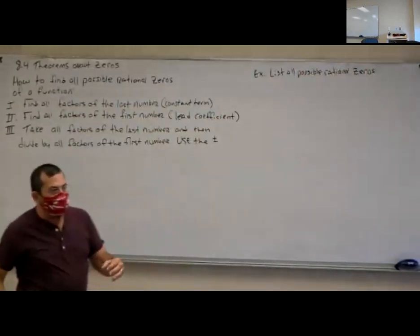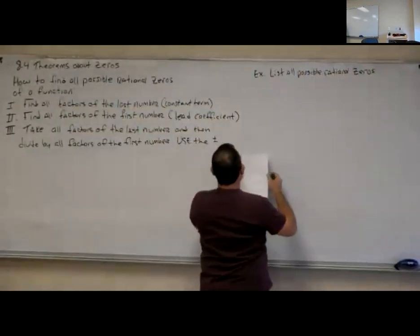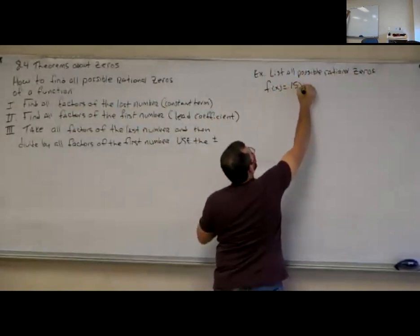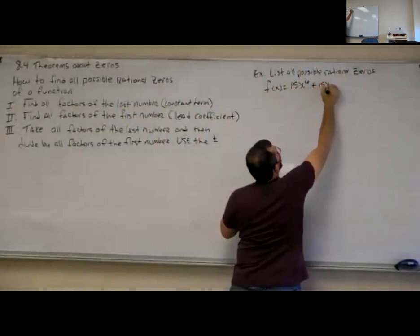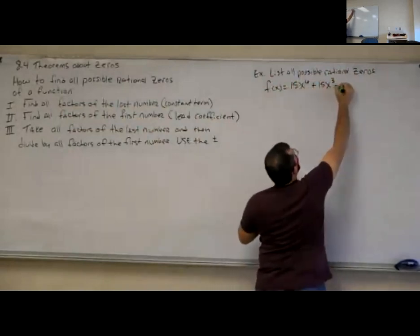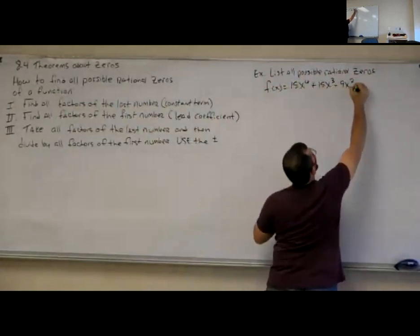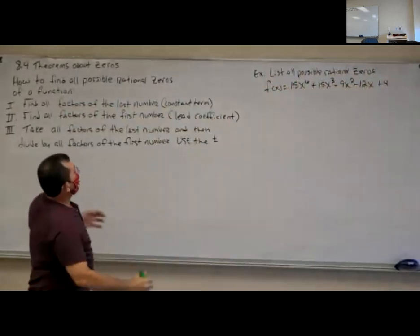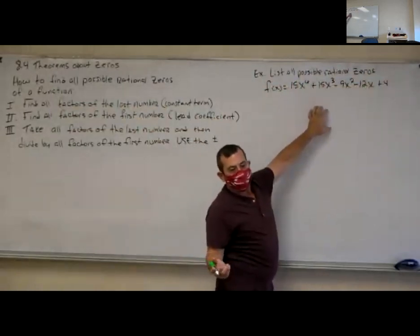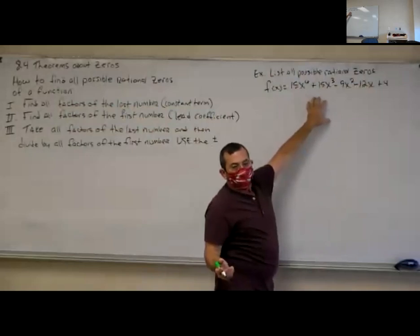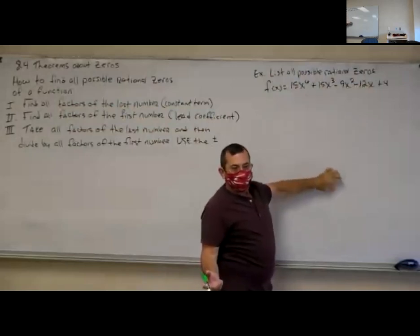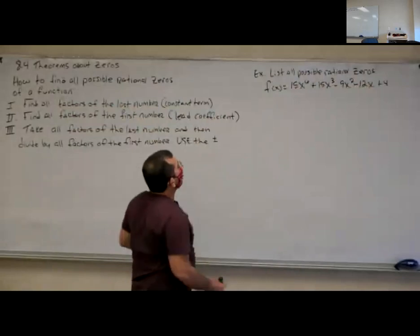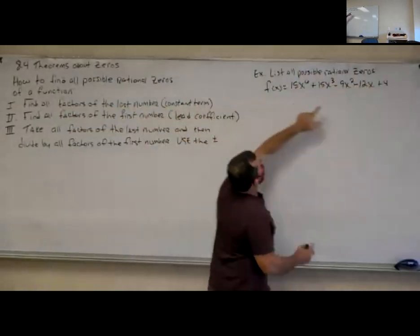Now this ain't hard work, it's just tedious work because you've got a lot of numbers on some of these factors. They're giving me f of x equals 15x to the sixth plus 15x to the third minus 9x squared minus 12x plus 4. I would not know where to start with synthetic division because I would probably start with numbers like 0, 1, 2. But if we can find possible zeros, that eliminates the amount of extra work we've got to do. So the first thing we'll do is find factors of the last number, which is 4.